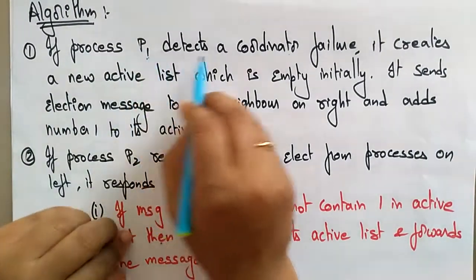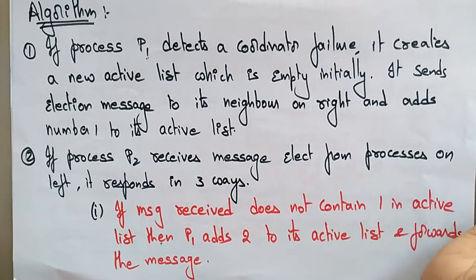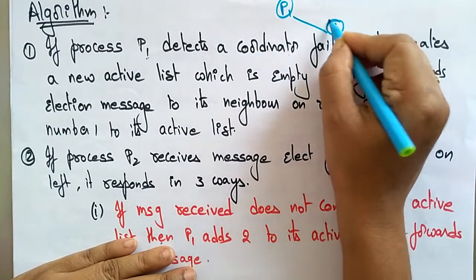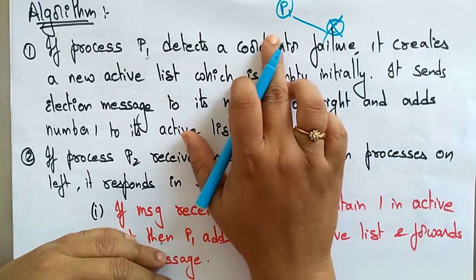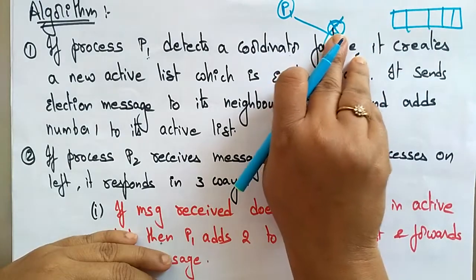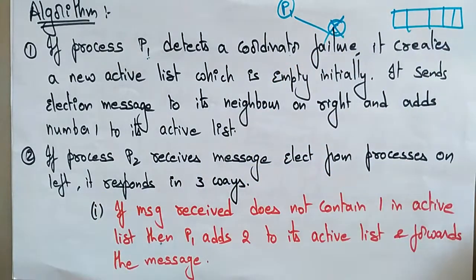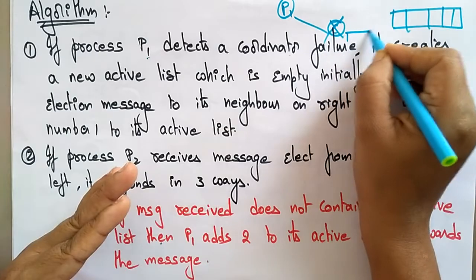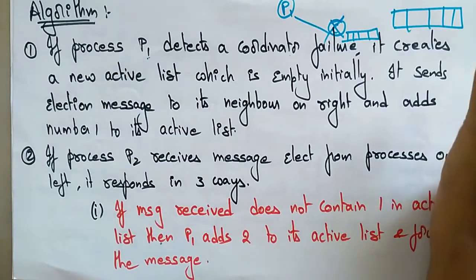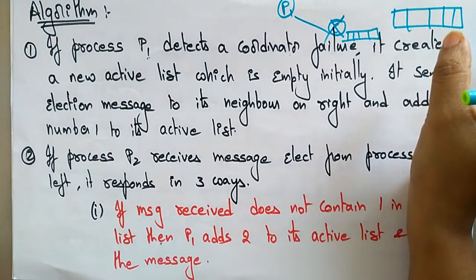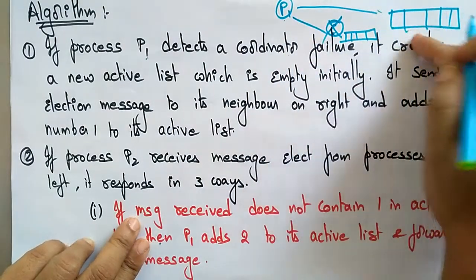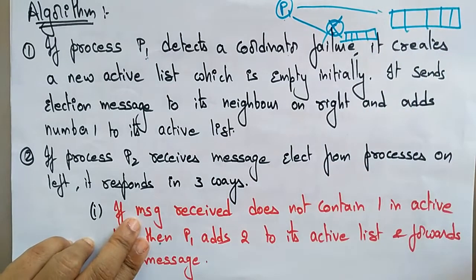Now let's see the algorithm. If process P1 detects a coordinator failure — similar to the bully algorithm — P1 detects the coordinator has failed. P1 then creates a new active list, because the coordinator's active list is destroyed since it has failed. When a process has the highest number it becomes the coordinator. So when the coordinator is destroyed, P1 creates a new active list which is initially empty.